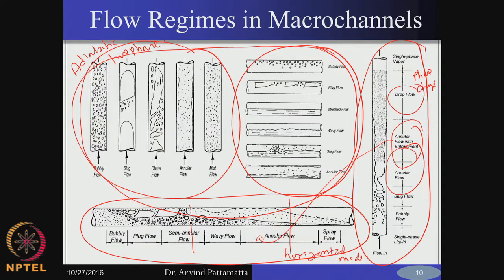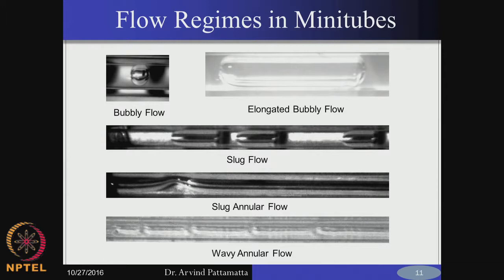Yesterday we saw some of the important flow regimes encountered in macrochannels. One very important difference between micro and macro channel regimes is the influence of gravity on macro channels. Depending on the orientation of these tubes — whether horizontal or vertical — you may encounter different flow regimes. Whereas in microchannels, once the diameter falls to the order of a few hundred microns and below, you do not have a strong influence of gravity anymore because the Bond number is less than about 2 or 2.5.